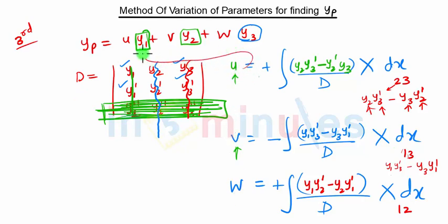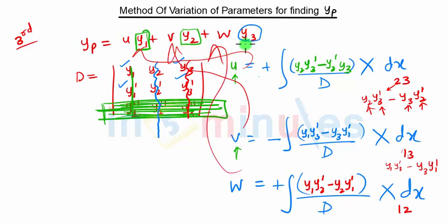After finding u, v, and w, we substitute these values into the equation yp = u·y1 + v·y2 + w·y3 to get the final particular solution yp. This will be clearer when we work through a problem, which we will see in the next video. Stay tuned for future lectures.